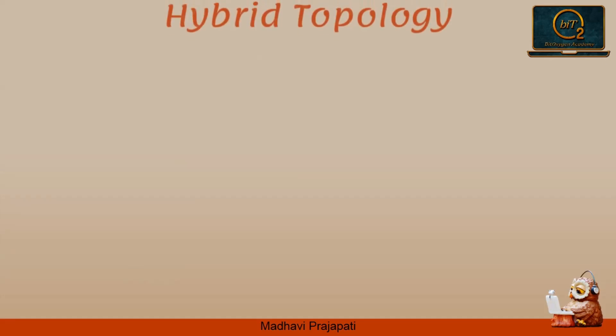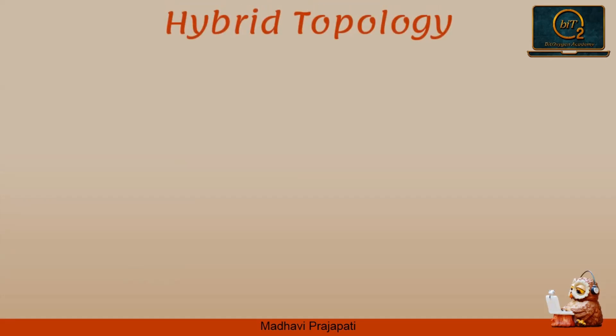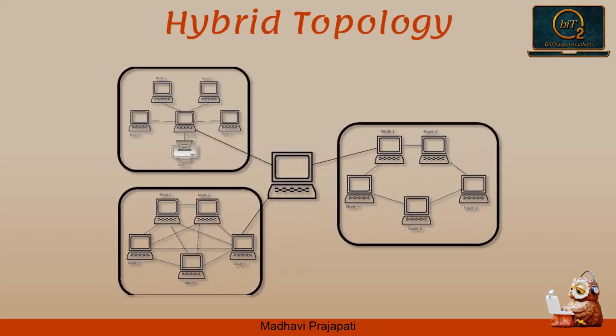Let's start with hybrid topology. A hybrid topology is a type of network topology that uses two or more differing network topologies. These topologies include a mix of bus, mesh, ring, star, and tree topology.